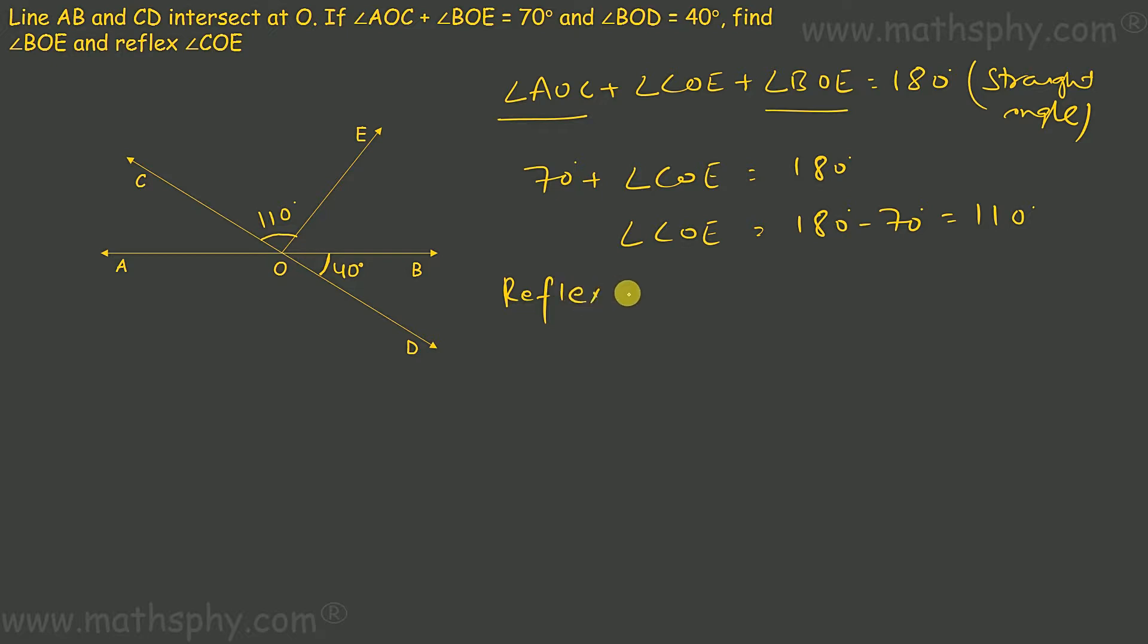Reflex of angle COE means we are talking about this angle from here till here. If that's a reflex of angle COE, that will be 360 degrees minus 110, which comes to 250 degrees. We know that this complete angle, the full angle, will be 360. If this piece is 110, the remaining piece, which is the reflex of COE, will be 360 minus 110, 250 degrees.